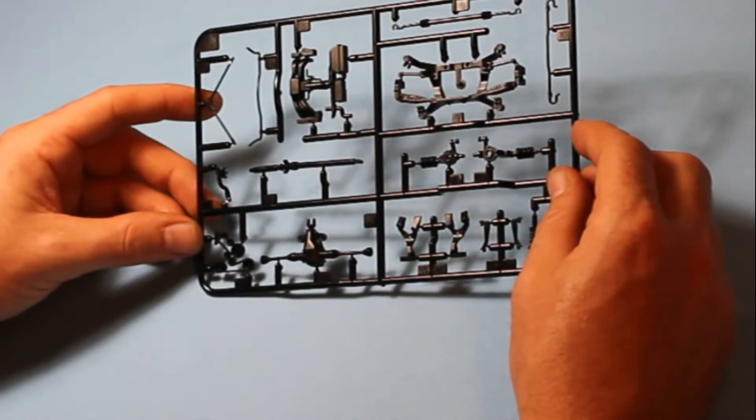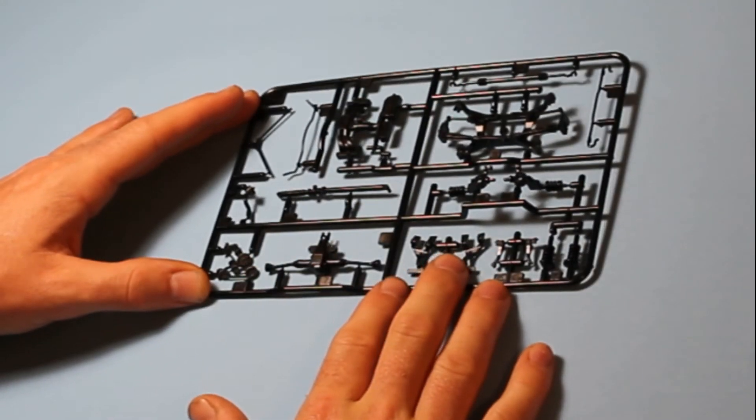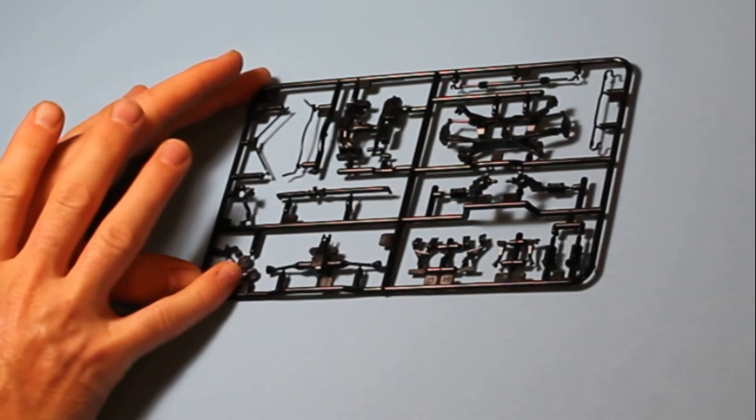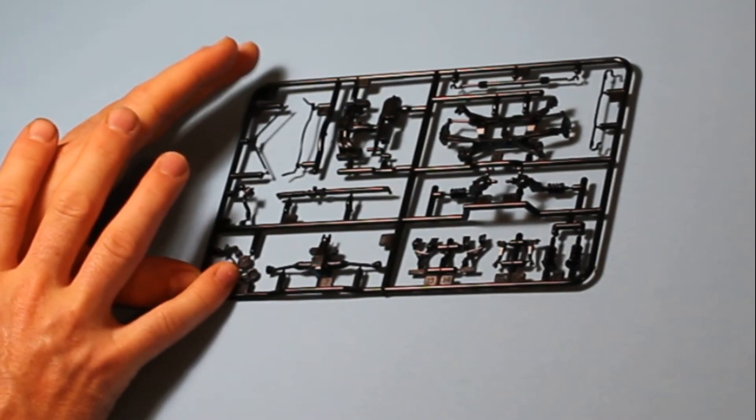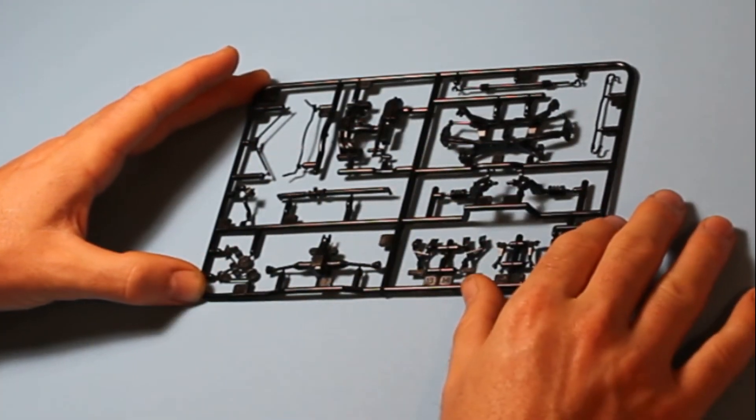Then we've got the next part, this is Sprue C. This has got lots of parts for the underside of the car, again with the fan belts as well for the front end in making up parts of the engine. All very well molded, very crisp, absolutely no problem with any of this as you'd expect.